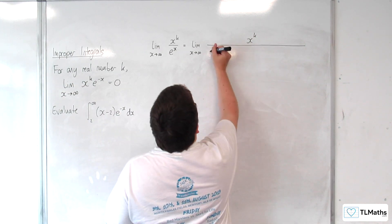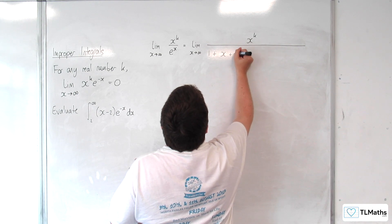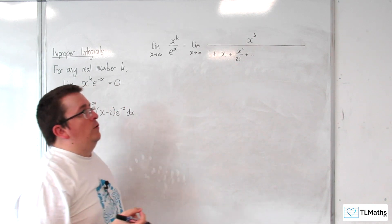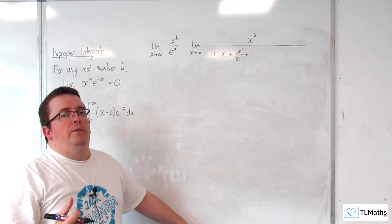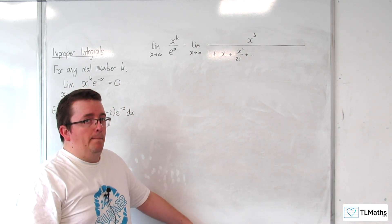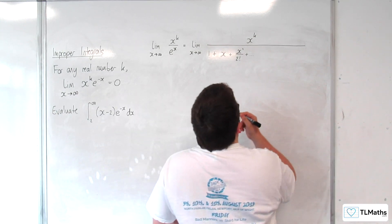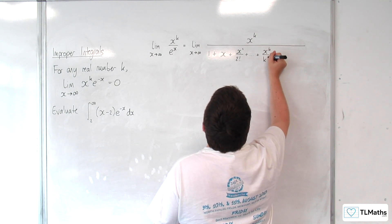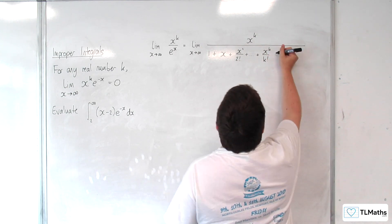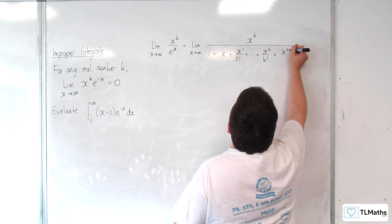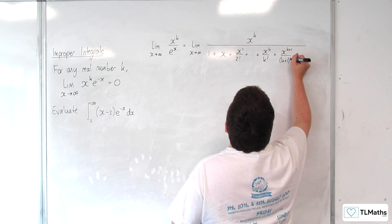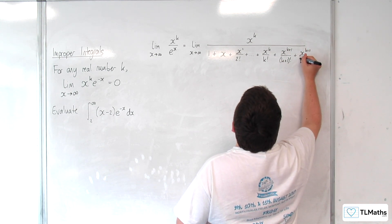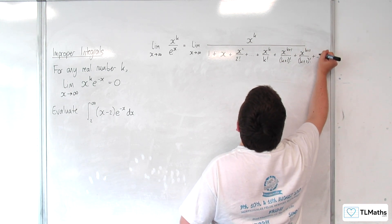That's equal to x to the k over 1 plus x plus x squared over 2 factorial plus dot dot dot. Now, remember, we're assuming k is a positive integer here. So that means that eventually I'm going to reach x to the k over k factorial. Then the next term will be x to the k plus 1 over k plus 1 factorial, and then x to the k plus 2 over k plus 2 factorial, and so on.